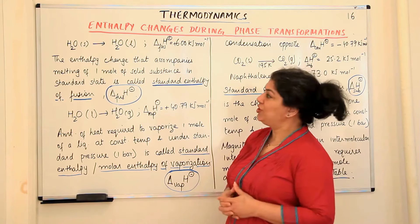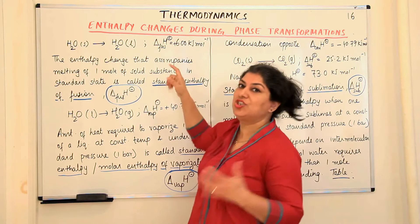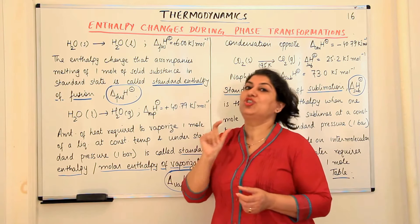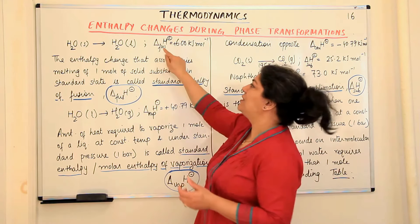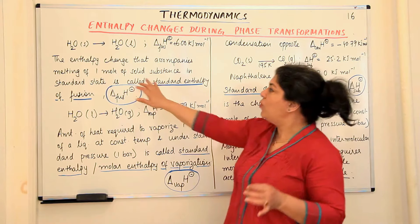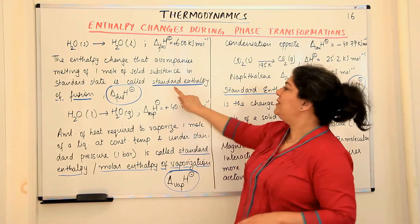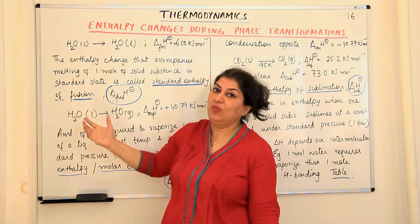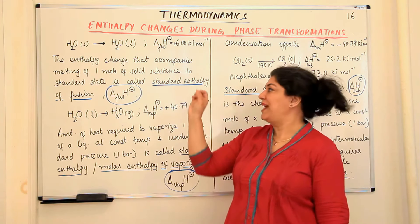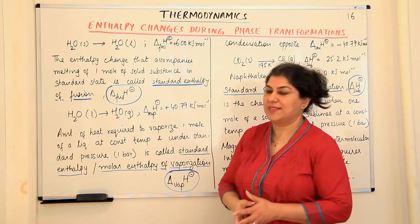So what is the standard enthalpy of fusion? The enthalpy change is represented as delta H fusion — we are specifying the reaction to be the process of fusion, so we call it the enthalpy of fusion. The enthalpy change that accompanies the melting of one mole of a solid substance in its standard state is called the standard enthalpy of fusion, written as ΔH°_fus, where the superscript indicates standard state and the subscript specifies the process.